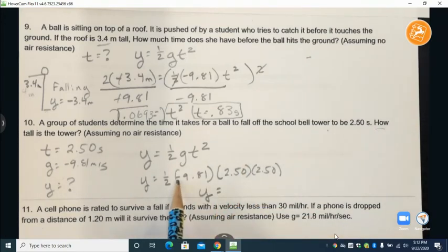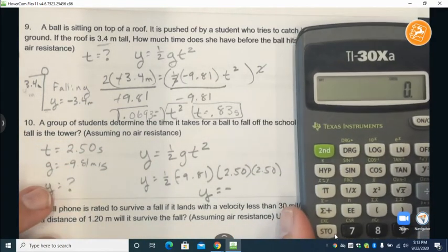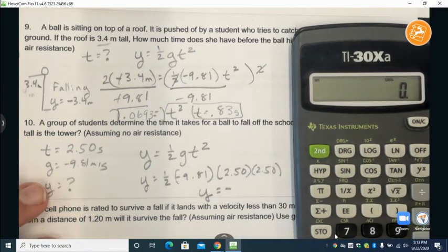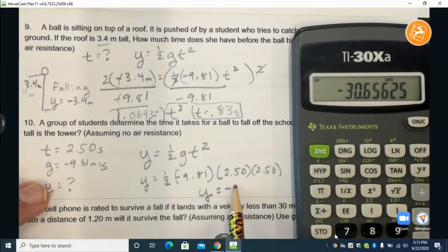Now you'll notice this is a negative so our y is going to be negative. So we'll just solve this expression out here. We'll say 0.5 times nine point eight one negative times 2.5 times 2.5 equals and we get a negative thirty point six five.